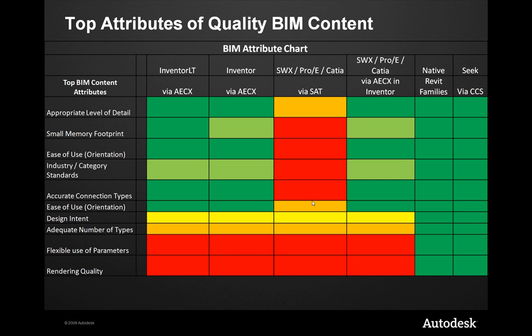We'll go ahead and choose the SAT file format, which seems to work pretty well from a geometry standpoint. But as we'll see, it may not quite achieve some of the desired results as it pertains to BIM content. However, taking that manufacturing data from SolidWorks Pro, CATIA, through Inventor's AEC Exchange tool set — Inventor has a bunch of native translators, so we can open up native SolidWorks parts, native ProE parts, and then utilize some of the tools within the AEC Exchange tool set to simplify the data.